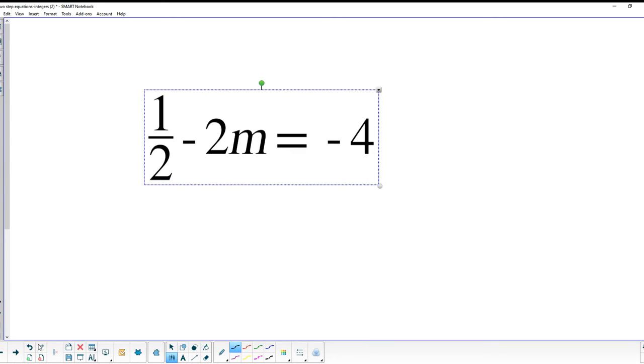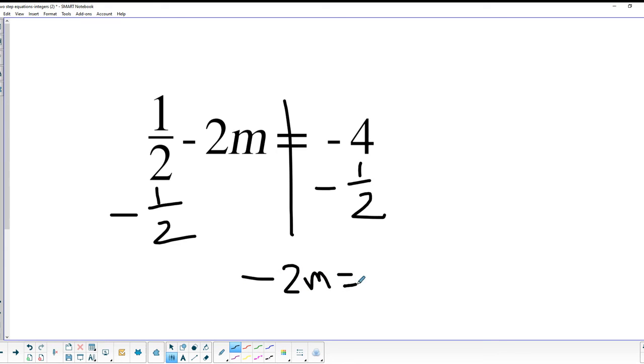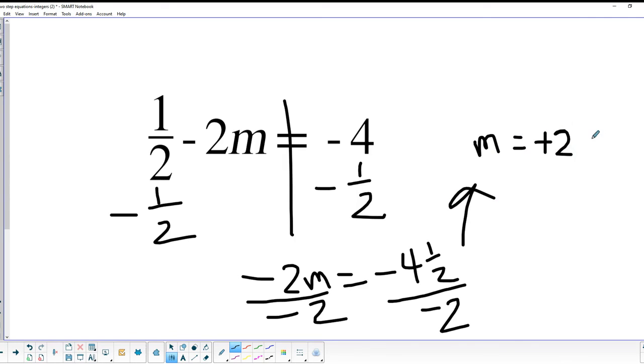All right, now we've got a couple of questions. What if, instead of integers, we have fractions? Well, that's not a big deal. We know how to add and subtract fractions. So in this case, we're actually going to subtract 1 half from both sides, subtract 1 half from both sides, as you see there. So after we do that, we're going to be left with negative 2m equals negative 4 and 1 half. So then our next step is going to be divide both sides by negative 2. And when we do that, we end up with m equals positive 2 and 1 fourth. That will be our answer on that one.